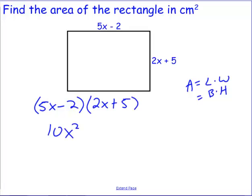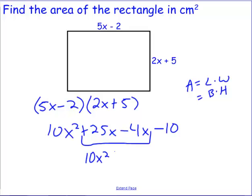Again first times first gives 10x squared, then the outside times the outside gives plus 25x, inside would be minus 4x and then the last term would be minus 10. You can see where we can combine those middle terms and that will be huge when we get to factoring. We end up with 10x squared plus 21x minus 10 and make sure we have a label, this would be centimeters squared.